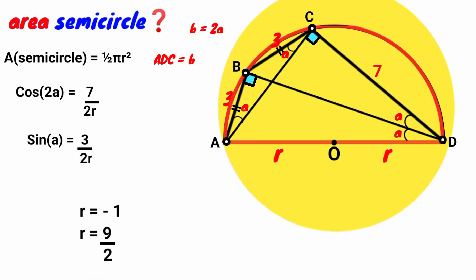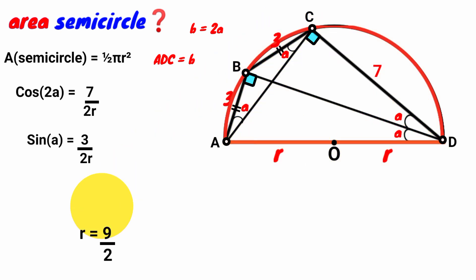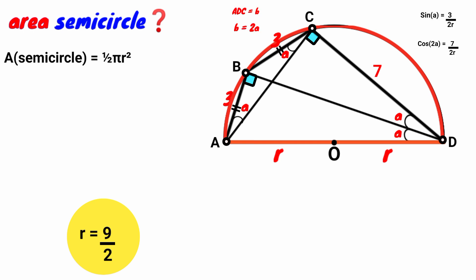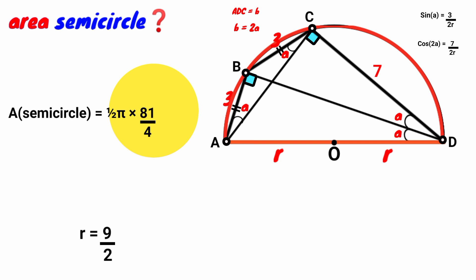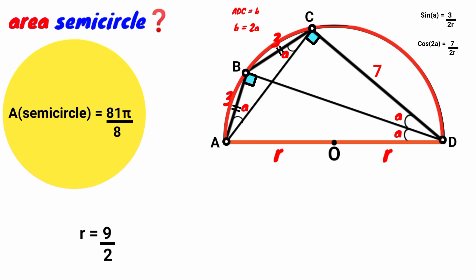R is the radius of the circle and cannot be negative, so we discard R = −1. Therefore R = 9/2. Substituting back: (9/2)² = 81/4. So the area of the semicircle = ½ × π × 81/4 = 81π/8 square units.